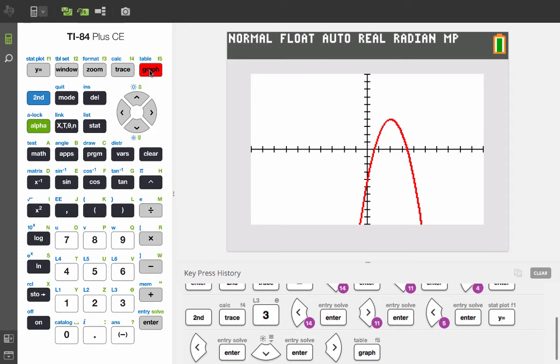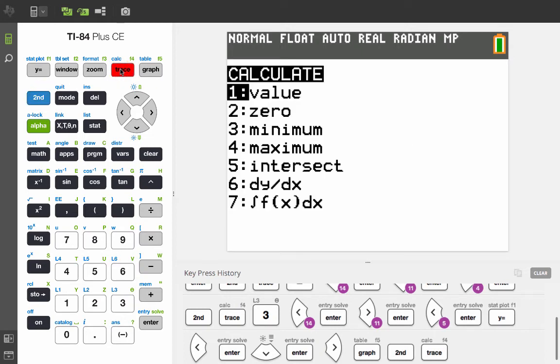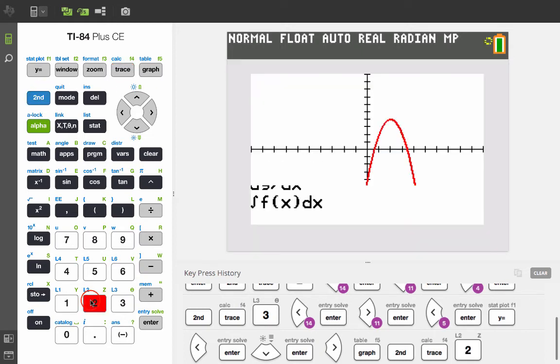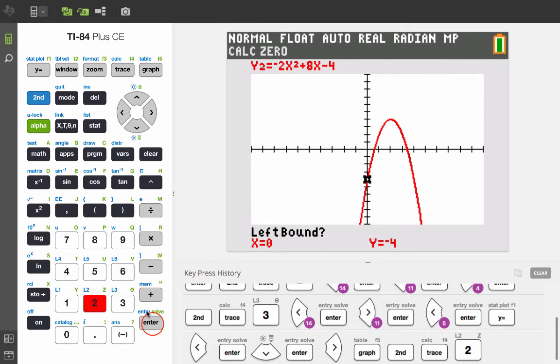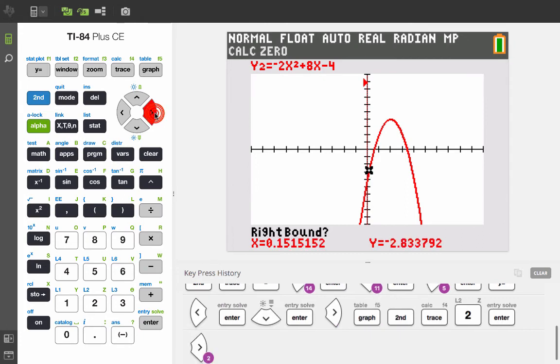Now the zeros are found in the same way. I'll do those quickly so that we can see what they are. So we're going to use second calc zero, and the left bound is already to the left. The right bound we're going to move up here, enter, and guess, enter. And that zero point is approximately .59.